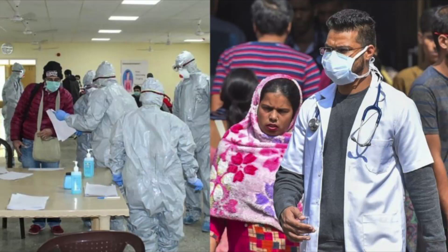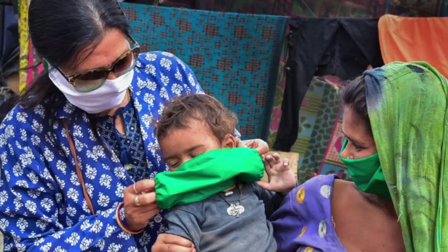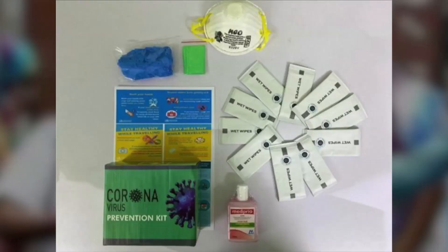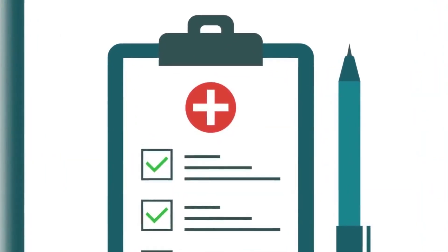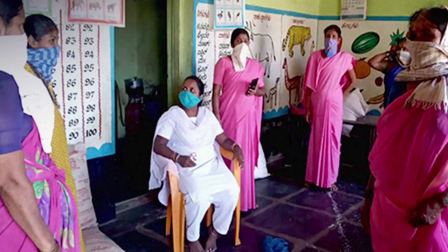They have to monitor contacts daily and inform the supervisory medical officer if any suspect develops COVID symptoms. They create awareness in the community about disease prevention and home quarantine. Health workers are given a toolkit with pamphlets and educational materials. They also carry masks to provide to contacts who develop symptoms, and must enlist all contacts with their names, address, and contact details, submitting these to the supervisor daily.